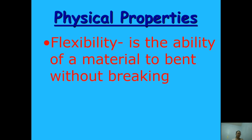The next property is flexibility. Flexibility is the ability of a material to bend without breaking. Some plastics and metals exhibit flexibility. Flexible objects like thin materials, wires, and plastic strings can be used for tying or binding objects and things.